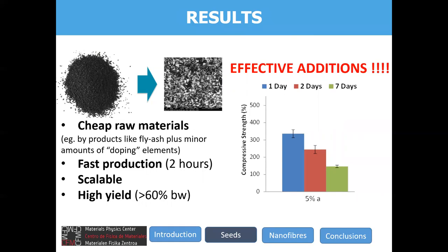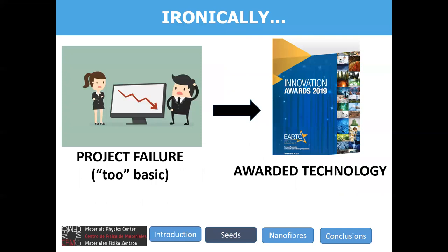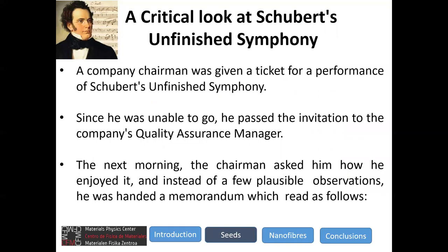What is also worth noting is that the process is cheap and very scalable. So what was considered useless science turned out to be applied science and technology. In fact, this technology has been recently awarded by the European Association of Research and Technology Organizations. Now let me illustrate how the concept of optimization of resources can be misguided if the wrong metrics are employed.